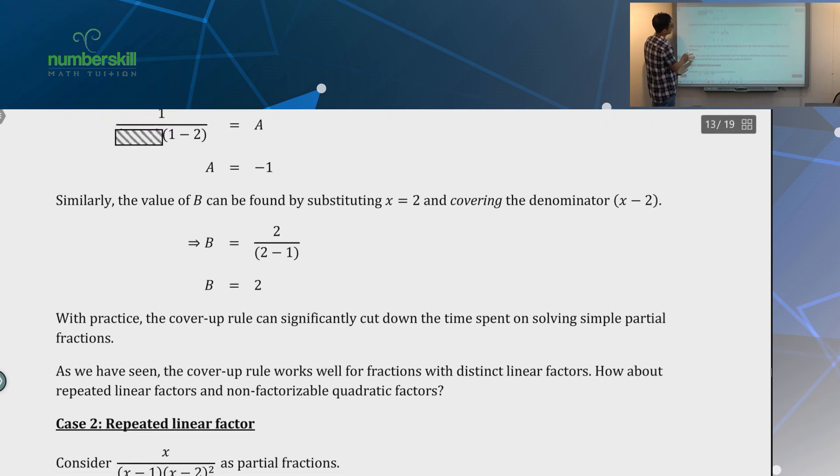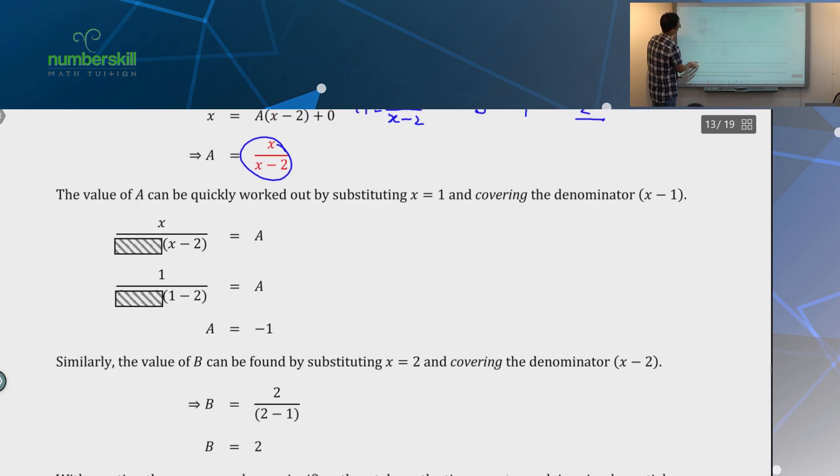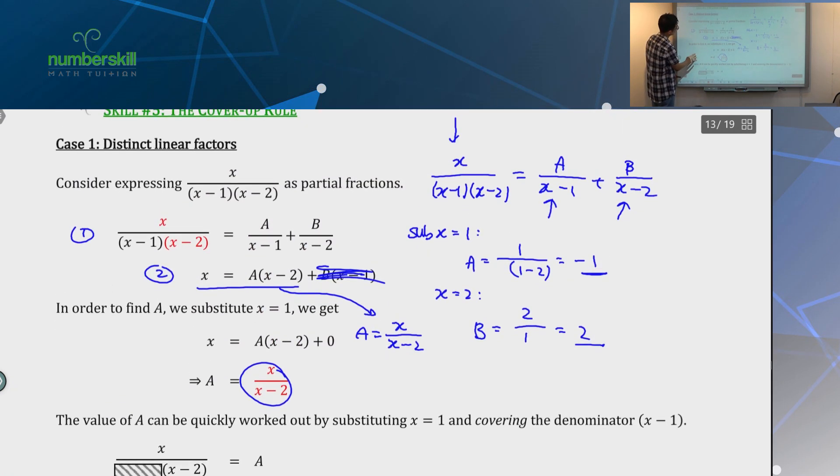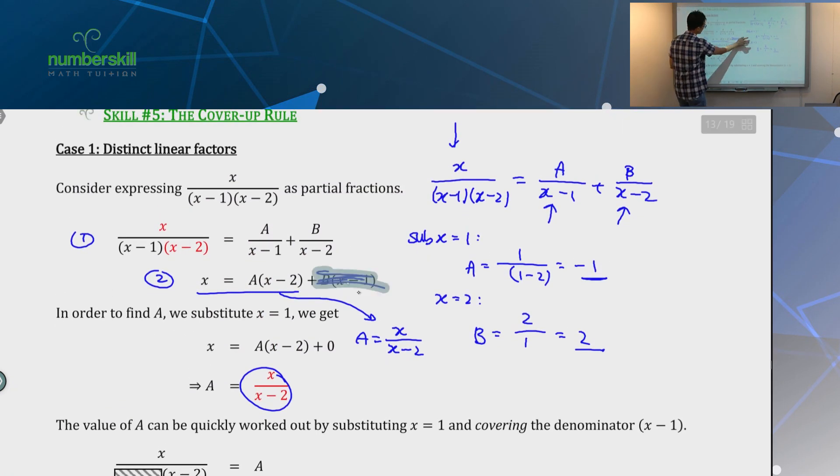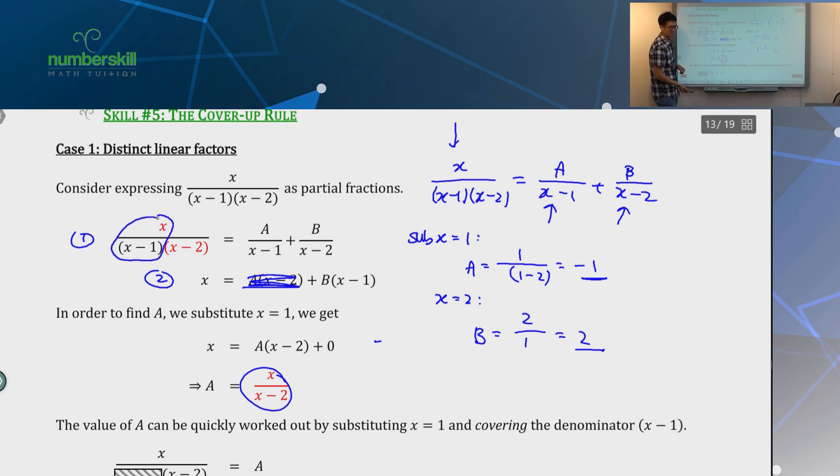So, basically, you make B disappear by putting x equal to 1, and then what you do is you put your x equal to 1 inside, which is just the red part, and that's how you calculate for A. Which is why you cover this up, and then you find A. And, of course, to do the same, you do for B.